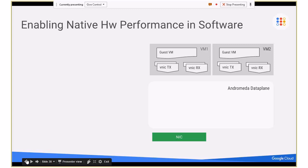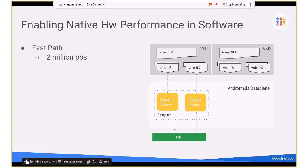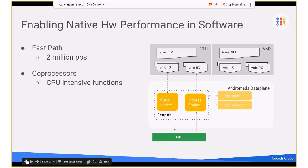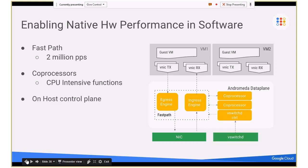I want to talk about what we do with our data plane — we're able to do native hardware performance fully in software. We have a fast path, which can provide up to 2 million PPS. The fast path is very simple — it does packet forwarding. Co-processors is a feature we introduced that handles CPU-intensive functions, with packet processing offloaded to them. There's also an on-host control plane based on OpenFlow, traditional vSwitchD, which controls all of this.